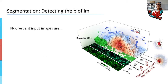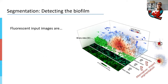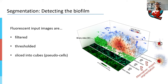Starting with the segmentation — this is really the heart of BiofilmQ, because a good segmentation is the very first and probably most important step towards a good image analysis. We start in BiofilmQ with something very simple — image analysis 101: you filter your image and then you threshold it. There's really no magic there. The little bit of magic comes afterwards, which is when we slice our structure into cubes. We do this because we need a spatial context for any measure that we do.